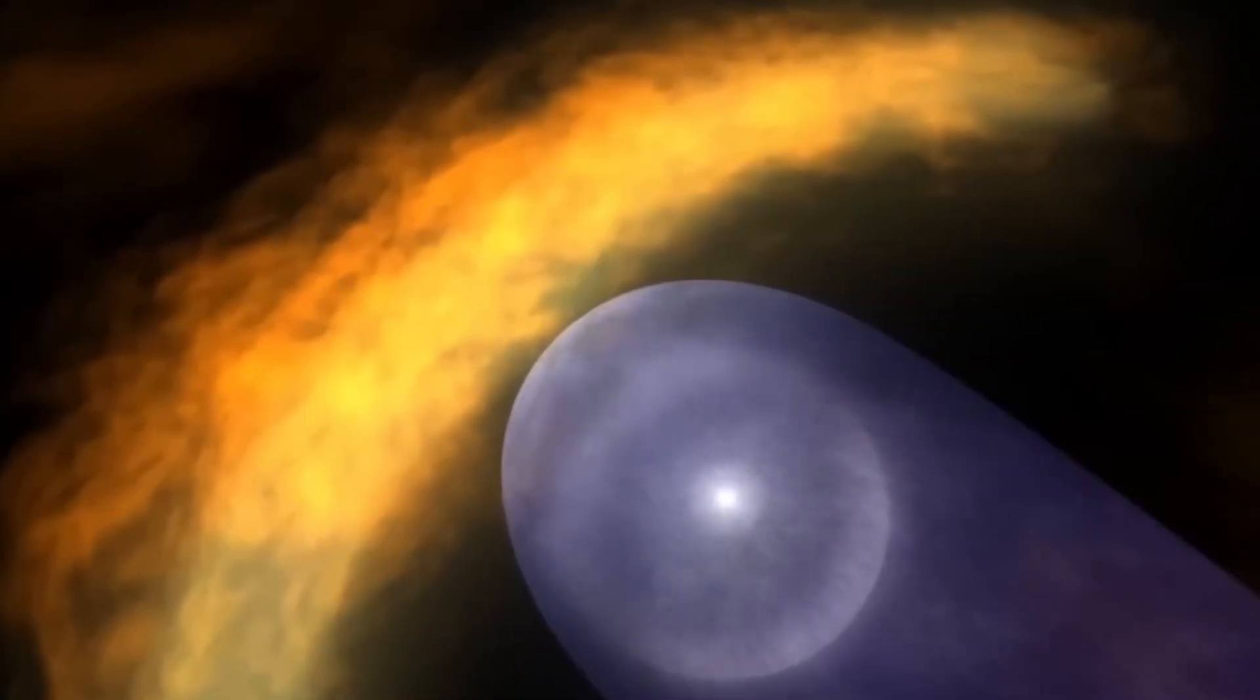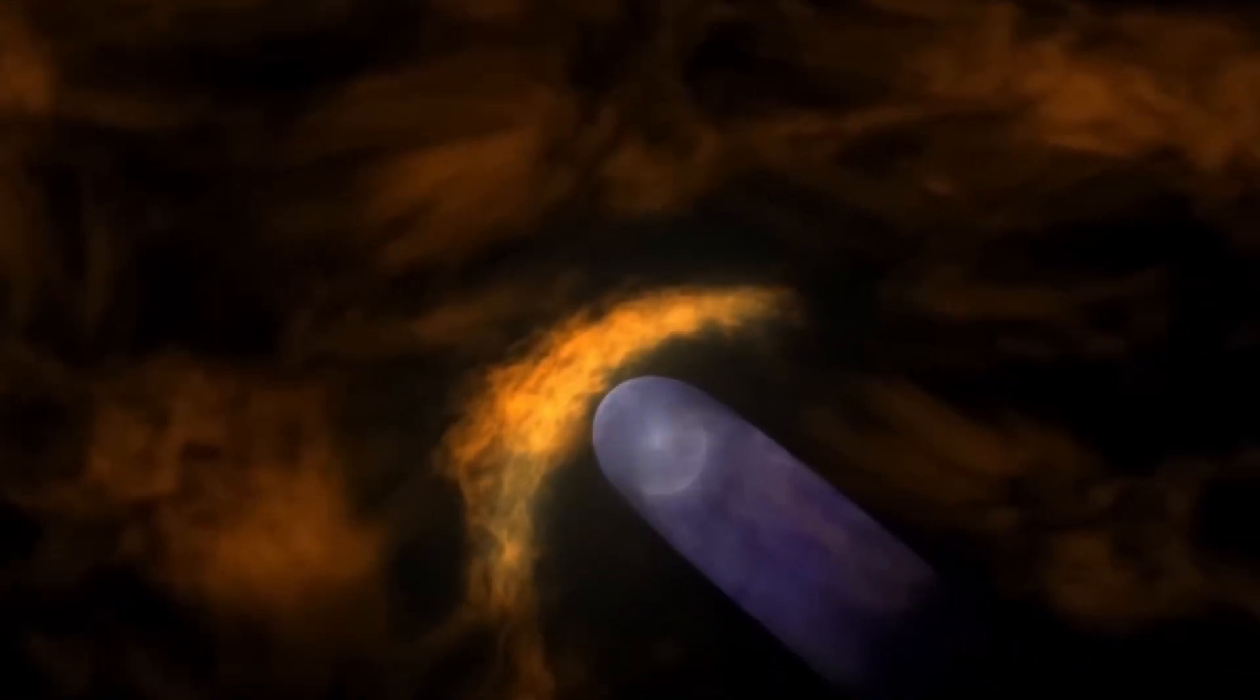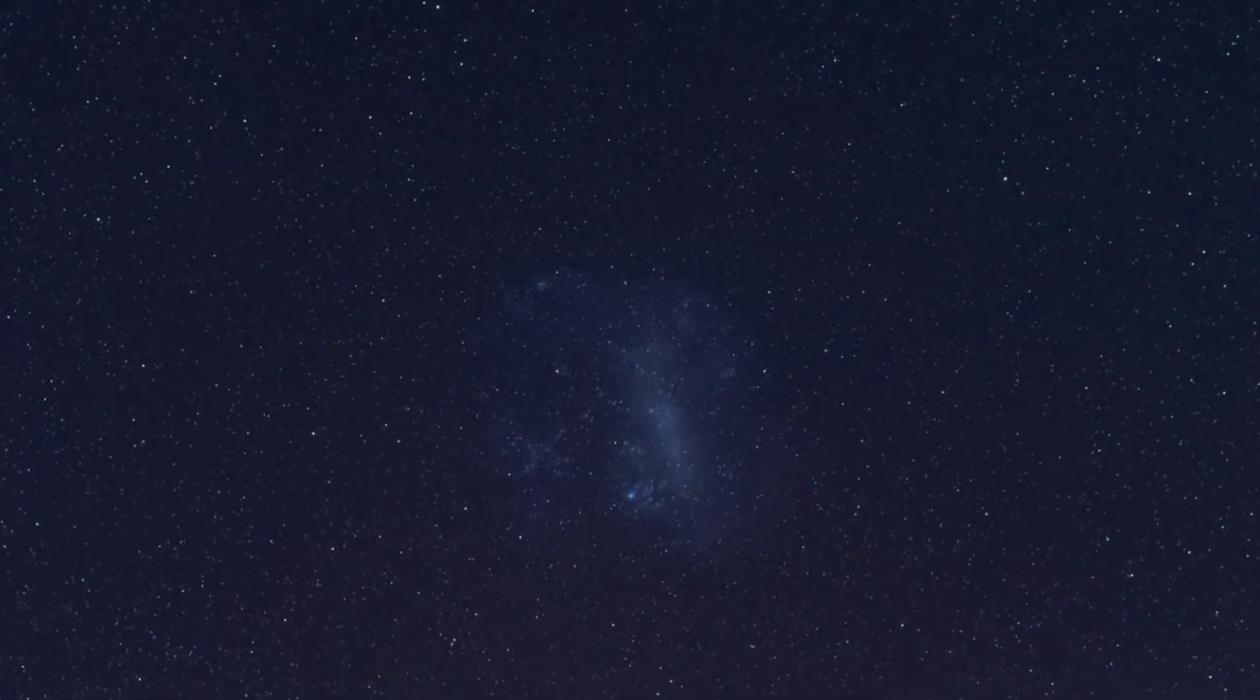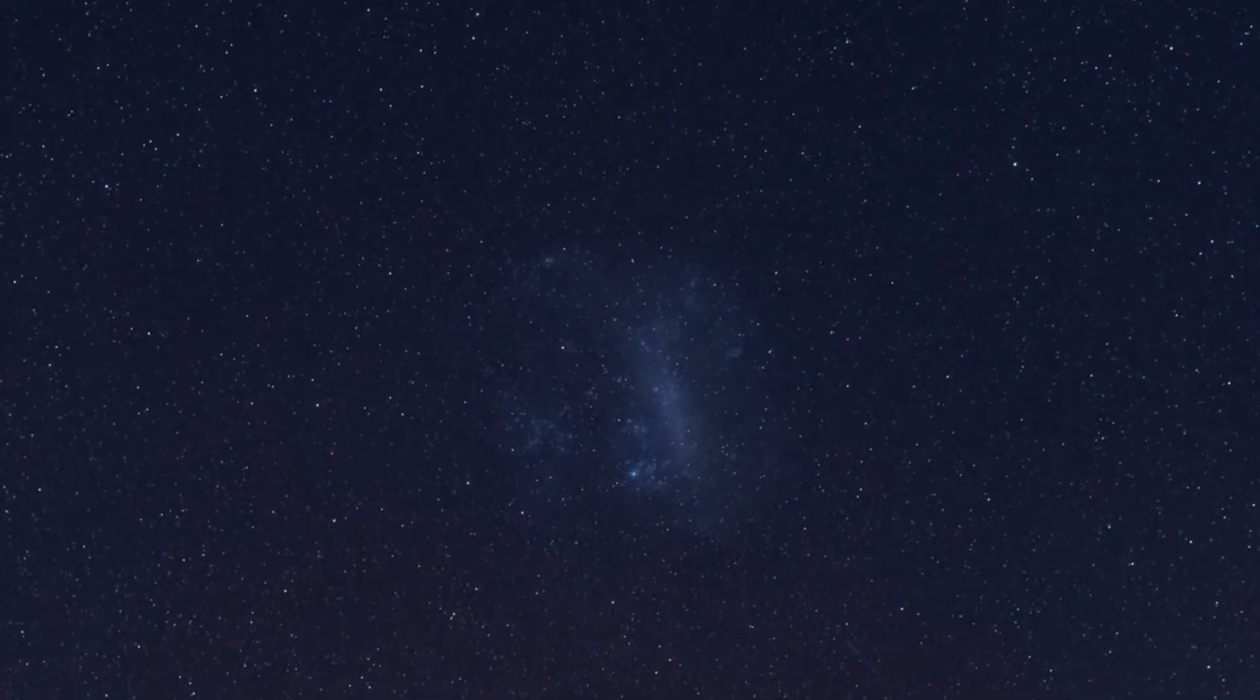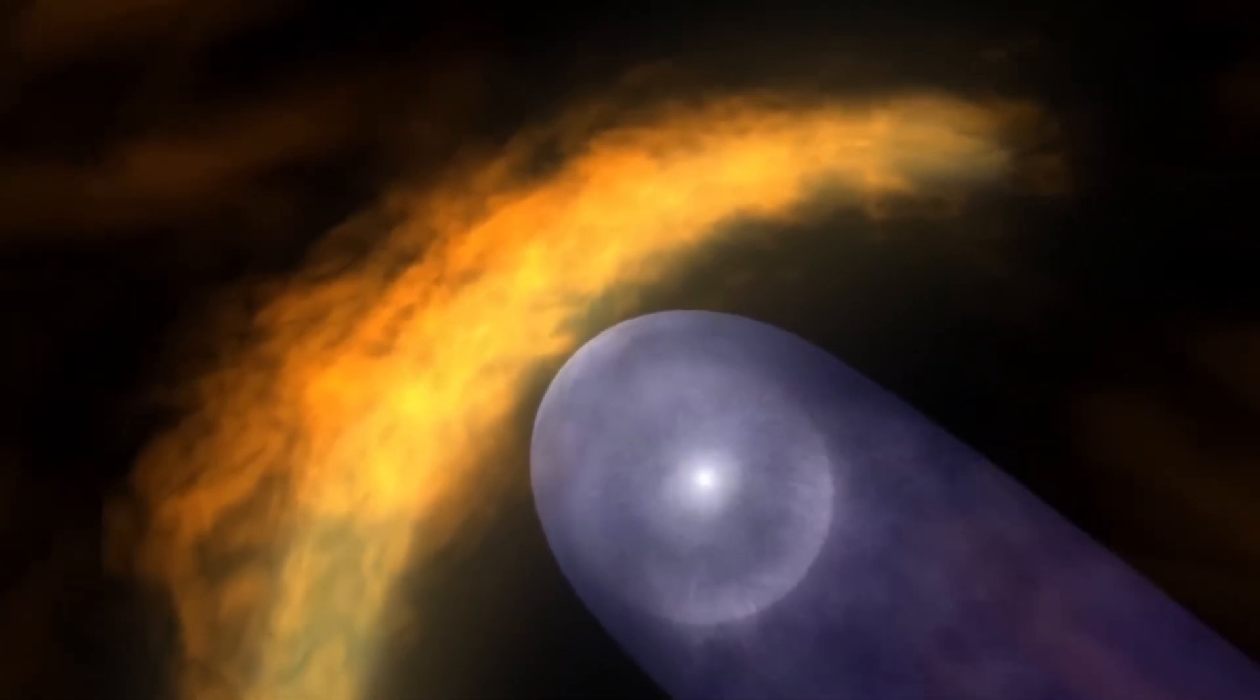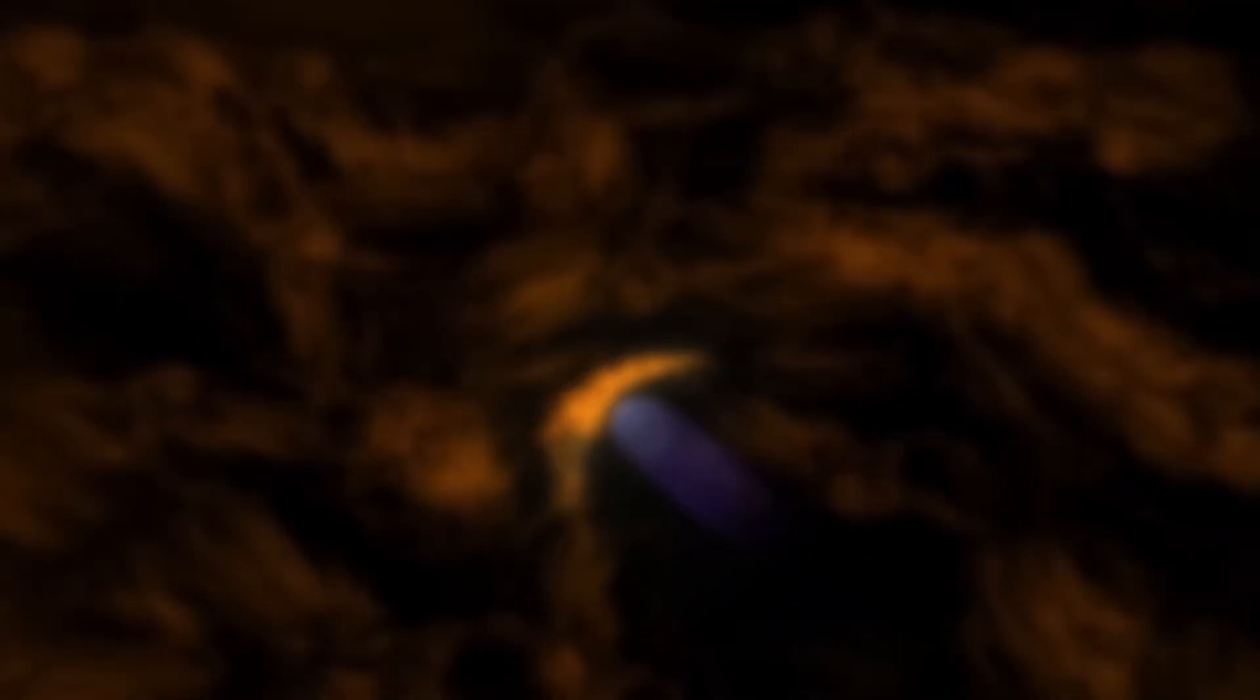Right now, our solar system is traveling through what astronomers call the local interstellar cloud, a region of slightly higher density gas and dust spanning roughly 30 light-years across. Yet despite currently hosting our entire solar system, how many science documentaries have ever mentioned it? This interstellar environment directly interacts with our heliosphere, compressing it from certain directions and extending it in others, creating asymmetries that no simplified model could ever properly represent. The establishment's silence on these interactions is deafening.